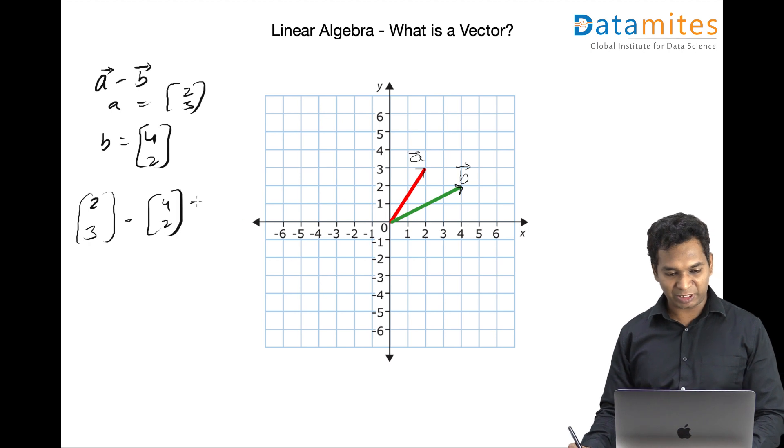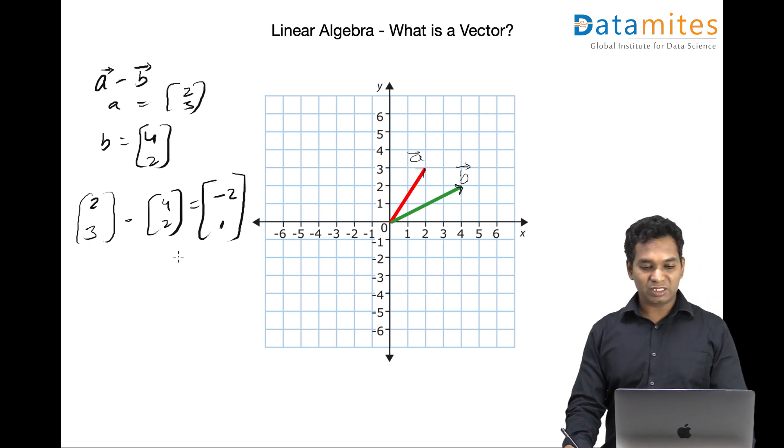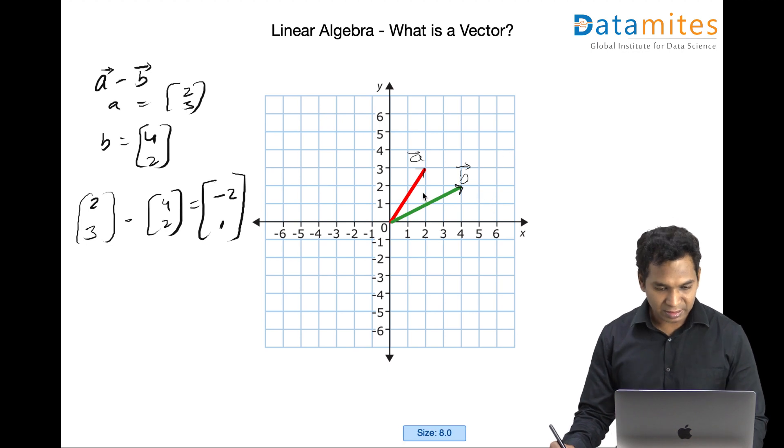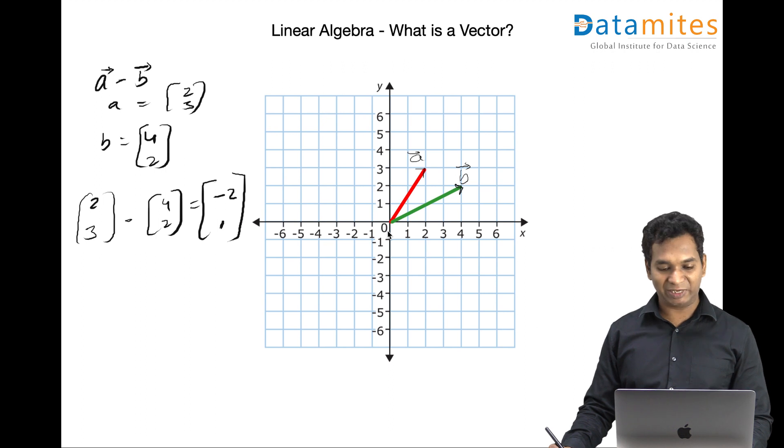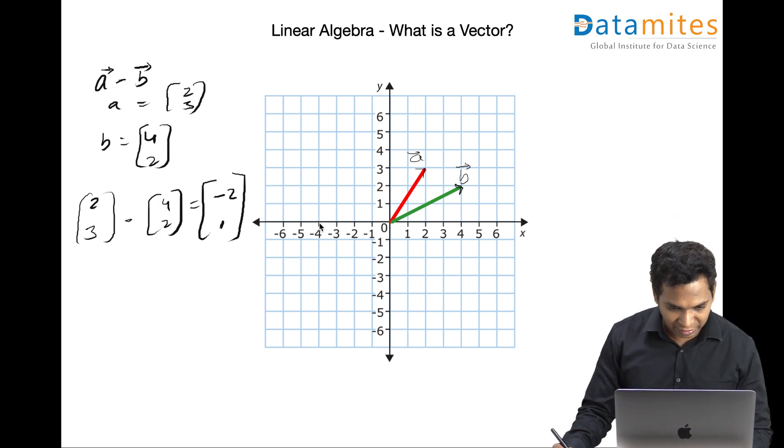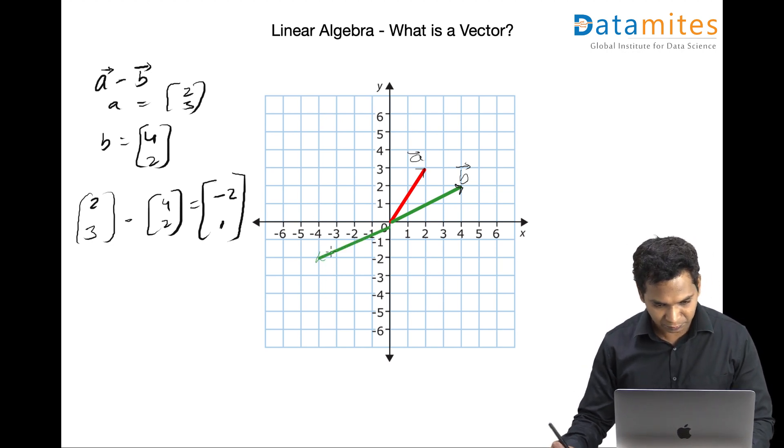From a numerical perspective, it's straightforward. We are subtracting x from x and y from y, which results in minus two, minus four is minus two, and three minus two is one. So if you want to look into a visual aspect, how it reflects visually, this is how it is. So when you're reversing the b vector, it becomes minus b is actually minus four minus two. So it means minus four here and minus two here. So this will be the vector minus b.